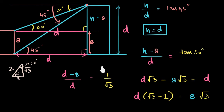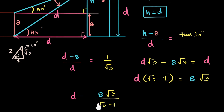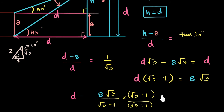Notice that the trigonometry part is over — that was done when we wrote tan 45 and tan 30. The heights-and-distances part was over even before that when we drew the diagram, which is probably the most interesting part: converting the story into the right triangles. Now we're doing algebra to get a clean answer. So d equals 8·root 3 divided by (root 3 minus 1). Almost always I'd leave it there, but teachers often insist on rationalizing the denominator.